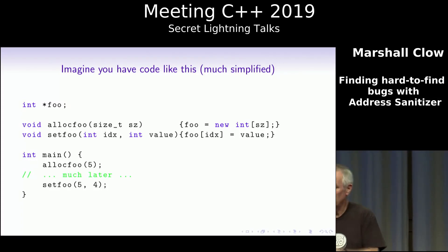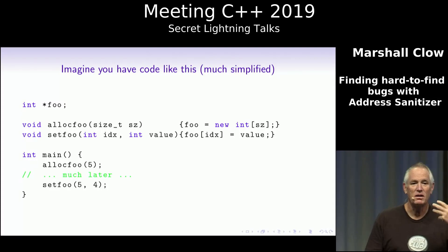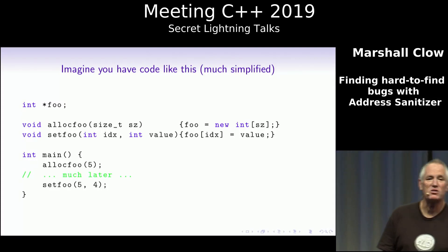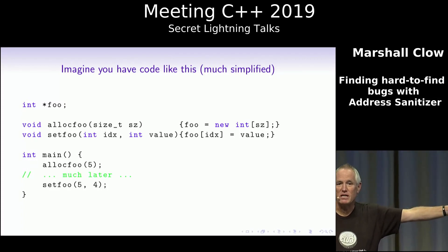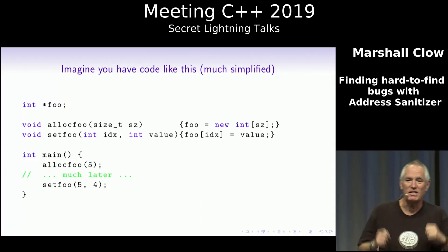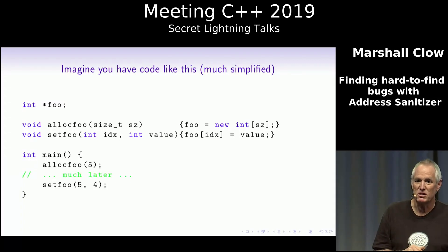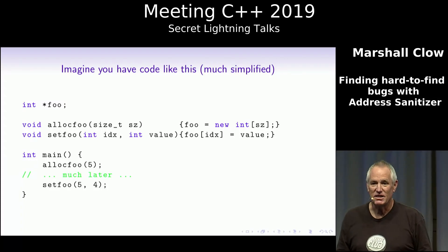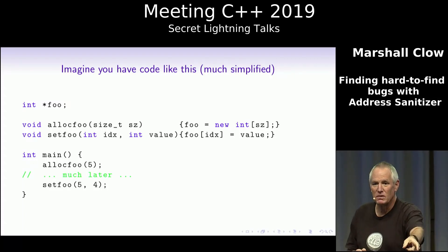On this machine, on my Mac, nothing in particular, nothing untoward — because the underlying memory manager allocates things in multiples of 16 bytes. And so there's extra space on the end of this heap block, and this write hits unused space in the heap that is not currently being used for anything else. And things just work. Then I take this code to some other platform where the underlying memory manager is different. Maybe it works, maybe it doesn't. And worse, maybe it works 999 times out of 1,000.